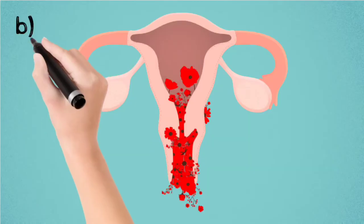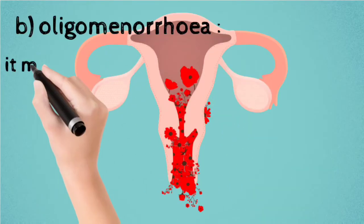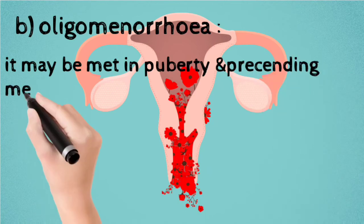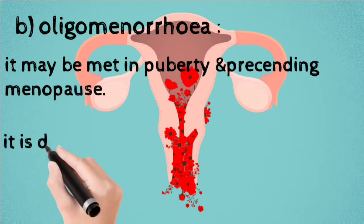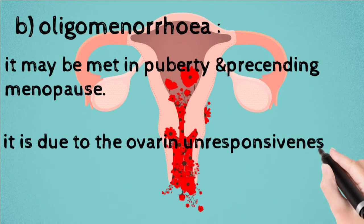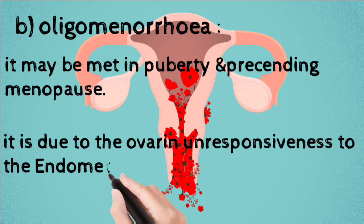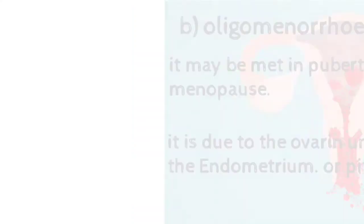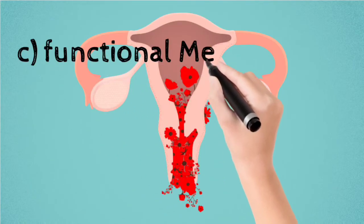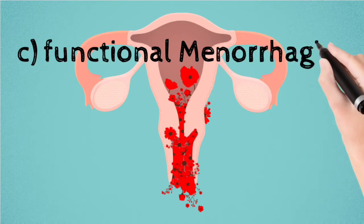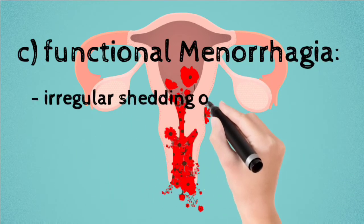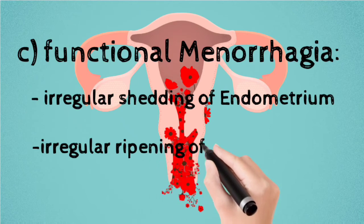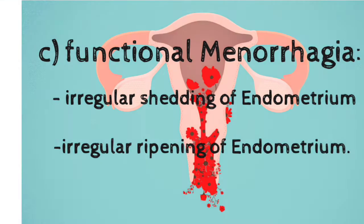The second condition is oligomenorrhea. It may be seen during puberty and the perimenopausal period. It is due to ovarian unresponsiveness to the endometrium or pituitary dysfunction. Next is functional menorrhagia, in which there is irregular shedding of the endometrium and irregular ripening of the endometrium.